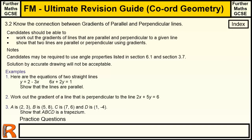So what do we need to know? We need to be able to work out the gradients of lines that are parallel and perpendicular to a given line, and we need to show that two lines are parallel or perpendicular using their gradients. You may have to use properties from sections 6.1 and 3.7, and we've got to move away from drawings — this is all theoretical work using numbers and equations.